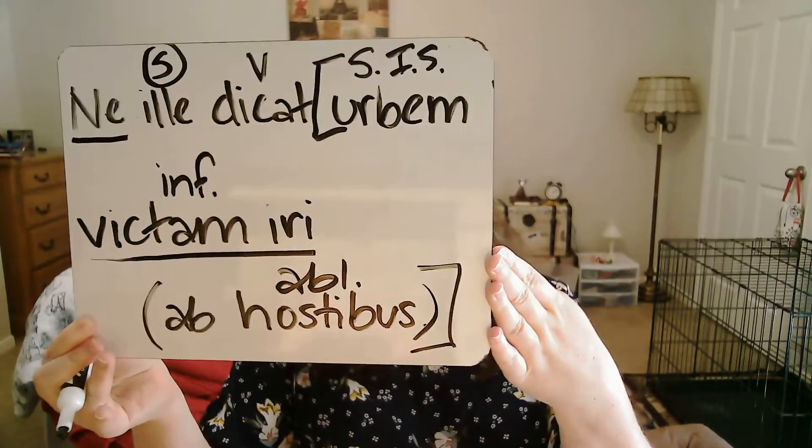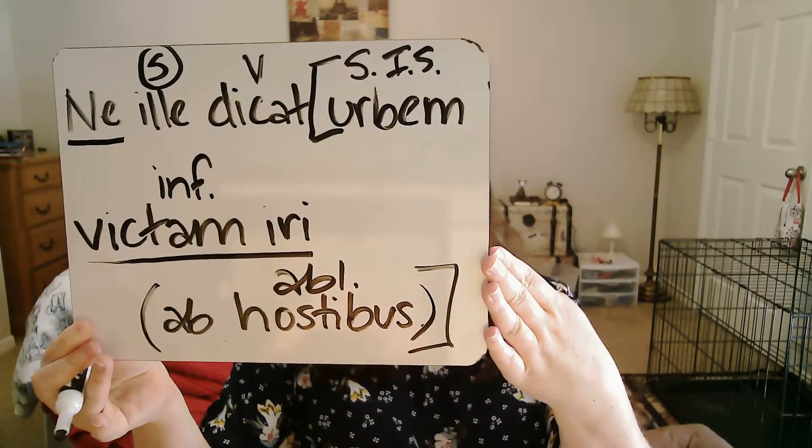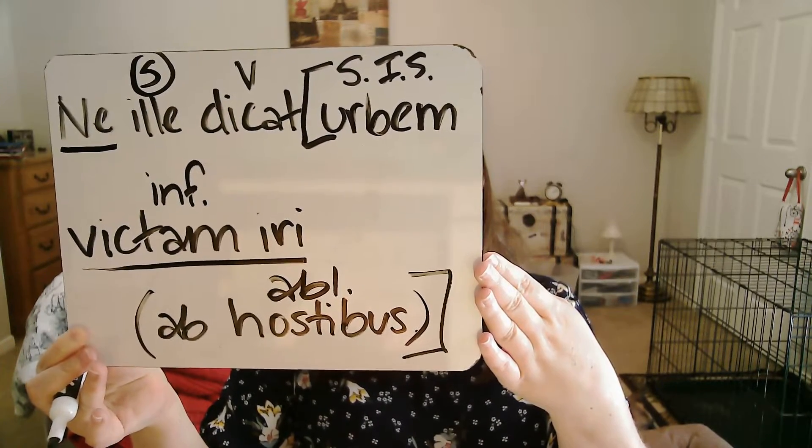Now I can place everything else. 'Urbem' is accusative, but that means it's going to be the subject of my indirect statement. And I'm going to start bracketing my indirect statement there. Lastly, I have 'ab hostibus', which is an ablative object of a preposition. So that's what my sentence framing should look like right there.